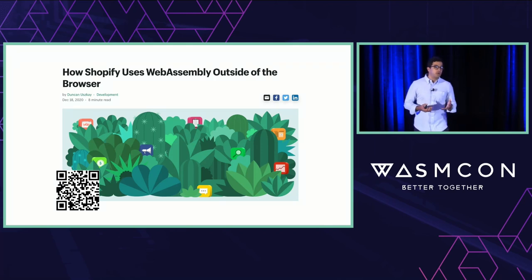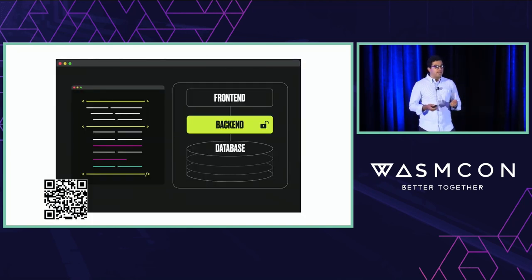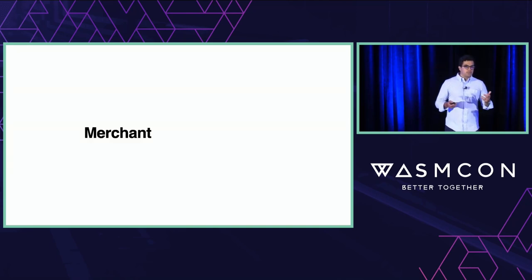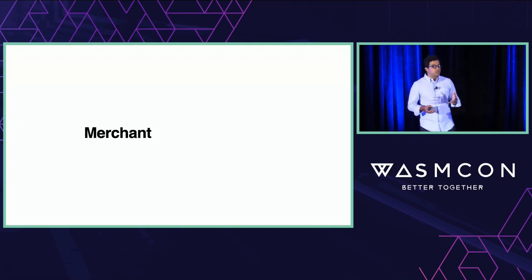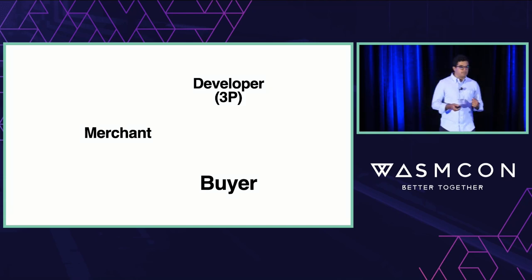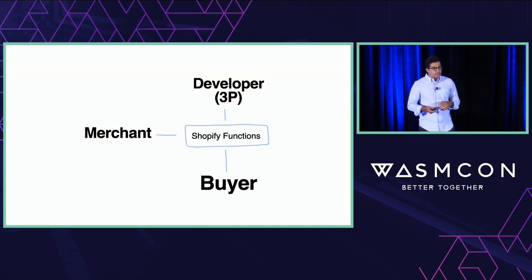To understand the context of this talk, we need to understand how Shopify uses WASM. My colleague Duncan wrote an article back in 2021 you can refer to for full details. The use case behind Shopify's adoption of WebAssembly is extensibility — opening Shopify's back-end for execution of third-party code to customize business logic. The personas involved are the merchant, who wants to sell goods online; the buyer, who wants to purchase from a merchant; and a third-party developer who creates applications to enhance Shopify's functionality, similar to how developers create apps for the iOS App Store. Shopify functions sit in the middle, enabling complex interactions between these three personas.